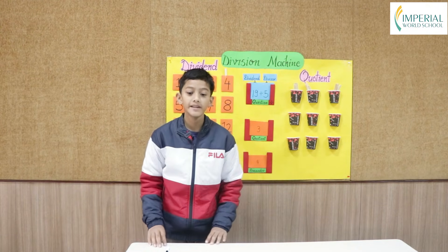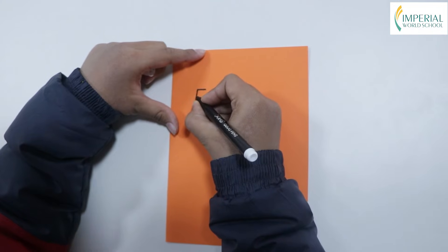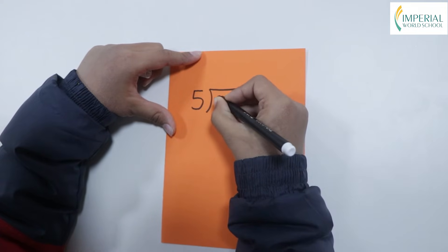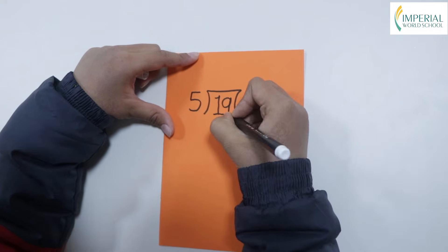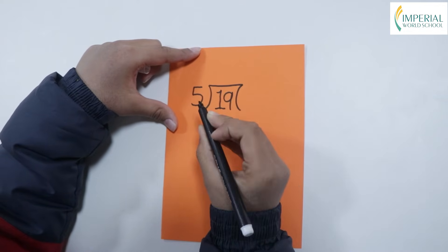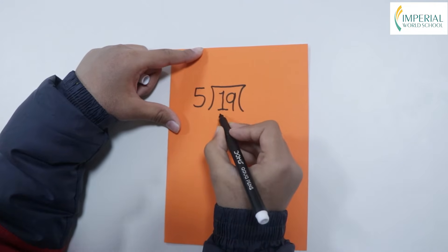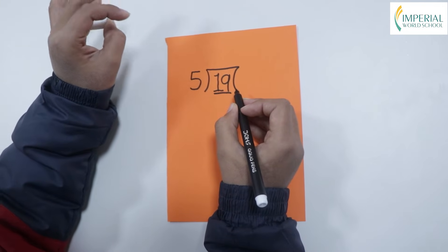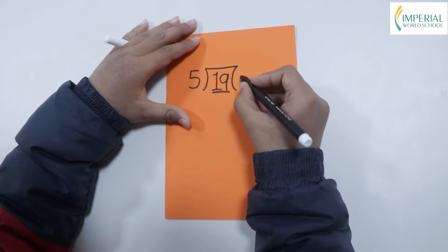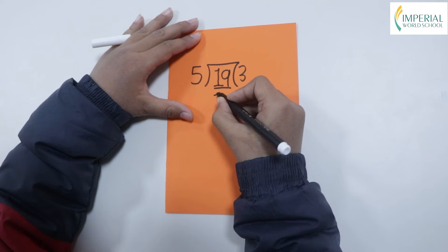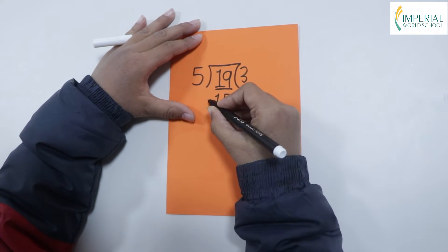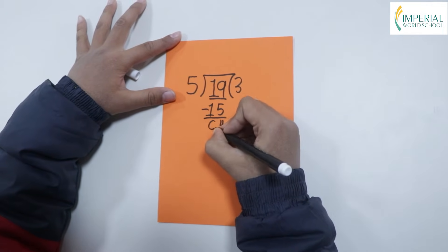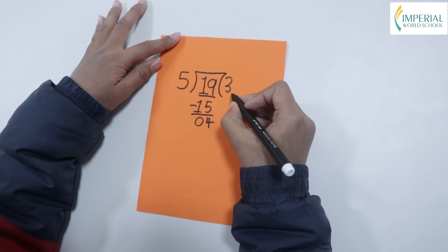So now let's do it in the division process. As 5 is bigger than 1, I cannot only take the number 1, so I have to take both of the numbers, that is 19. 5 ones are 5, 5 twos are 10, 5 threes are 15. So 15 is the closest number to 19, so 5 threes are 15. And 19 minus 15 is 4. So 4 is the remainder and 3 is the quotient.